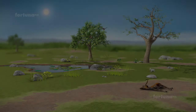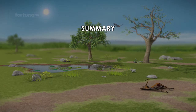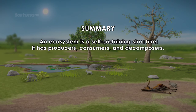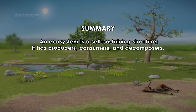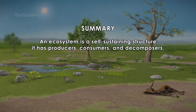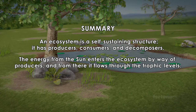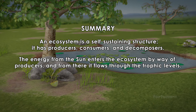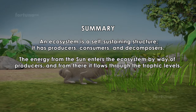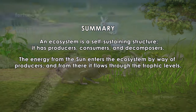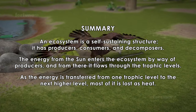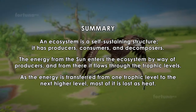Summary: An ecosystem is a self-sustaining structure. It has producers, consumers, and decomposers. The energy from the Sun enters the ecosystem by way of producers, and from there it flows through the trophic levels. As the energy is transferred from one trophic level to the next higher level, most of it is lost as heat.